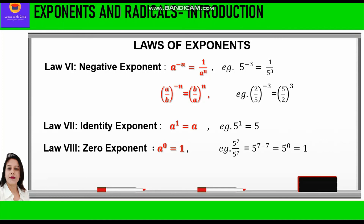That means anything raised to power 0, whether it is a rational number or a fraction, is equal to 1. For example, 5 raised to power 7 upon 5 raised to power 7. According to the second law of quotient of powers, the powers are subtracted, so we get 5 raised to power 7 minus 7, which is equal to 5 raised to power 0, which equals 1. Alternatively, whenever the numerator and denominator are the same, we cancel them out and get 1.